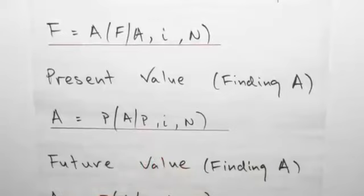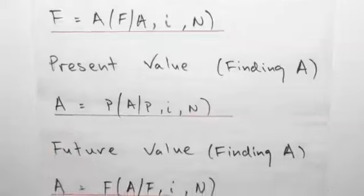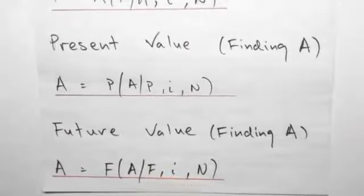And similarly for future value - finding annuity when given the future value, the interest rate, and the period of time. So by using these formulas or the interest rate table, you will be able to work out a series of cash flow.